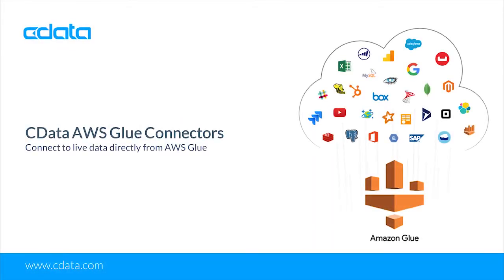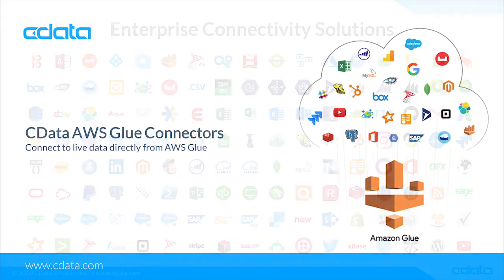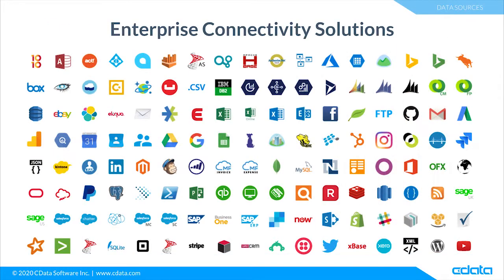AWS Glue is a serverless data integration service that makes it easy to discover, prepare, and combine data for analytics, machine learning, and application development. With the CData AWS Glue connectors, you can work with live data from dozens of SaaS applications, big data stores, and NoSQL data sources in your AWS Glue ETL processes.